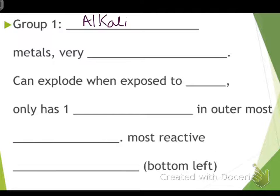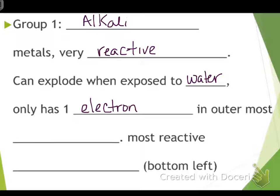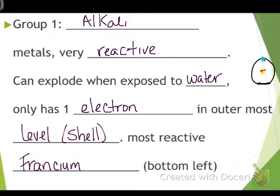Now we're going to talk about each individual group. First, you have your alkali metals. These are very reactive metals. They can explode when exposed to water. There's only one electron in the outermost level or shell. The most reactive of this group is francium, and that's because it's in the bottom left hand side. It's number 87, and it's because of where it's located and how many electrons there are and how many shells there are.